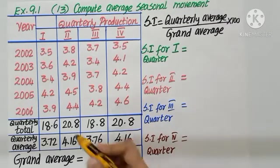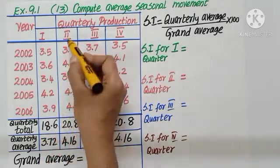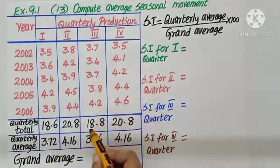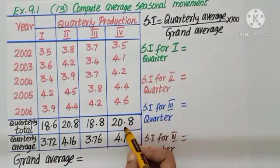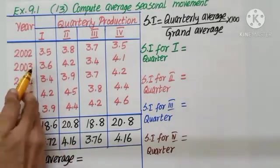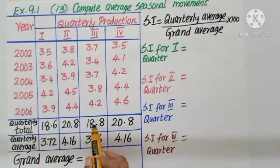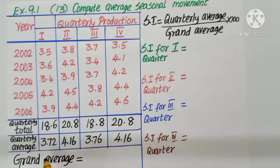We have just added each quarter total 18.6, 20.8, 18.8 and 20.8. Each total, there are 5 values given, divide by 5. Each total, divide by 5, we get 3.72, 4.16, 3.76 and 4.16.